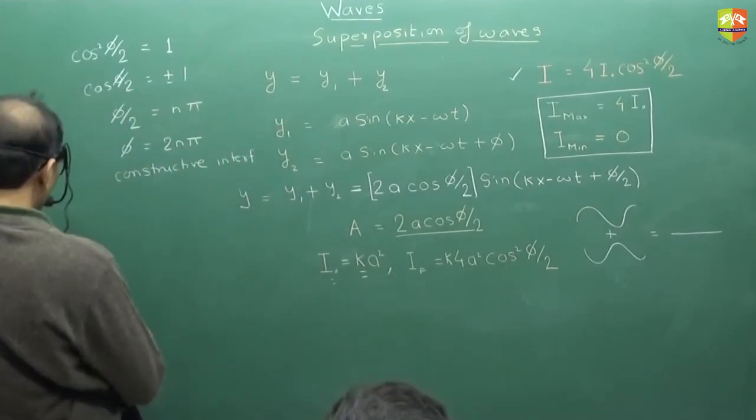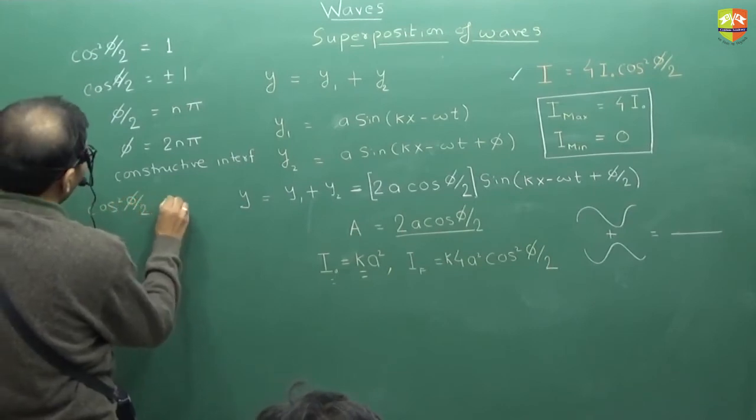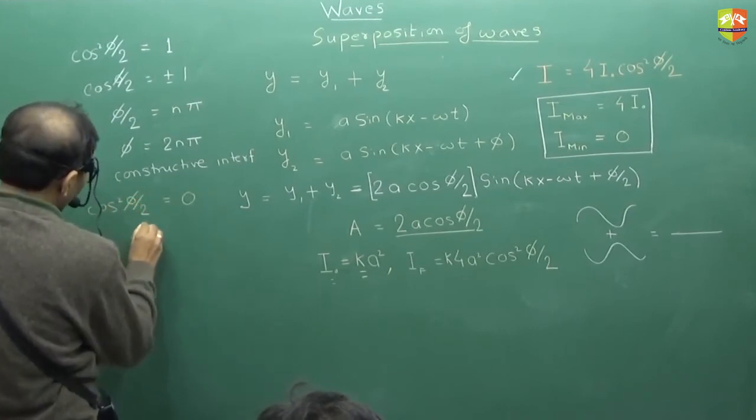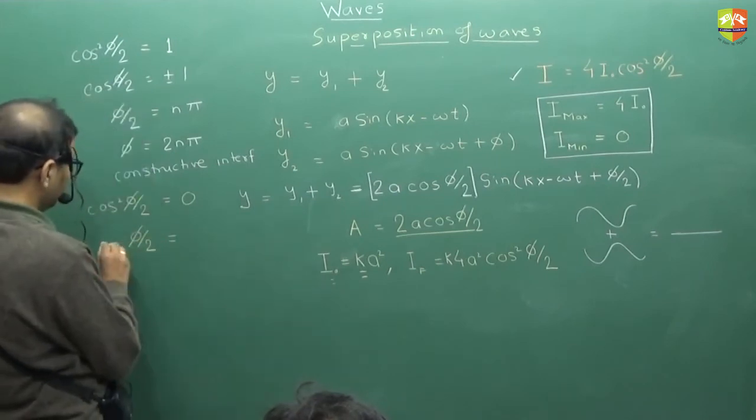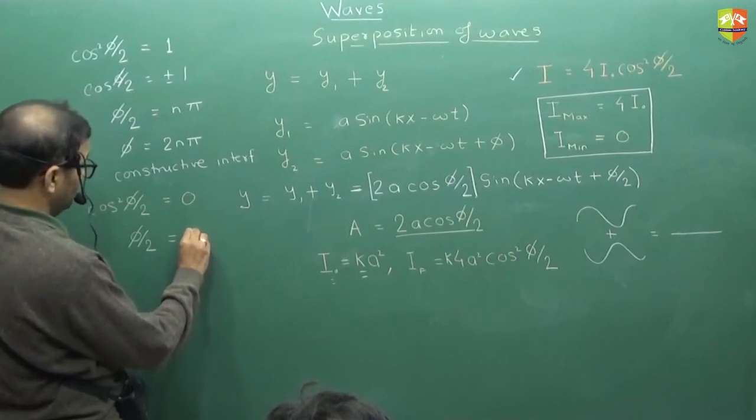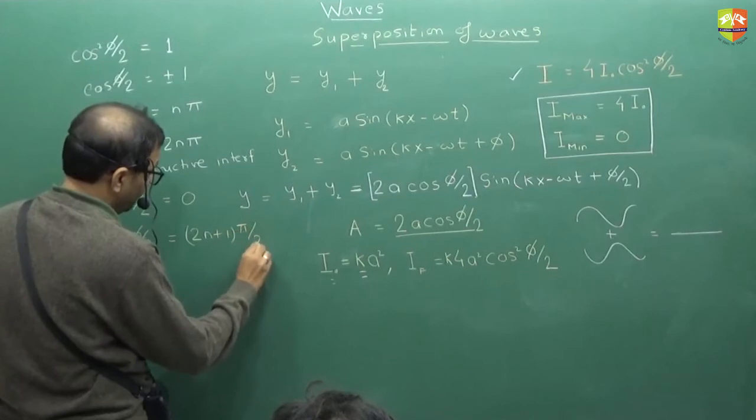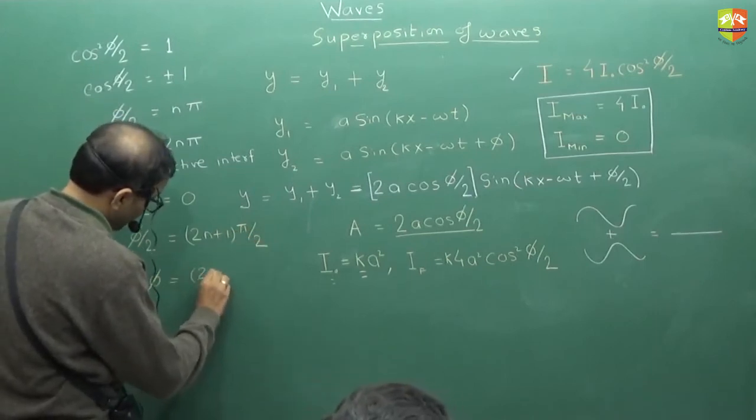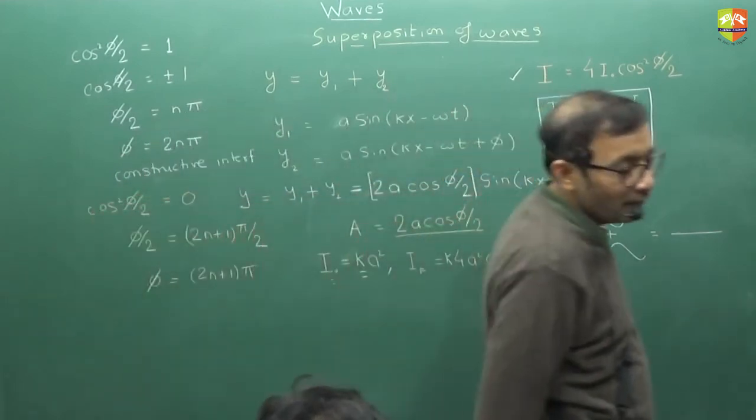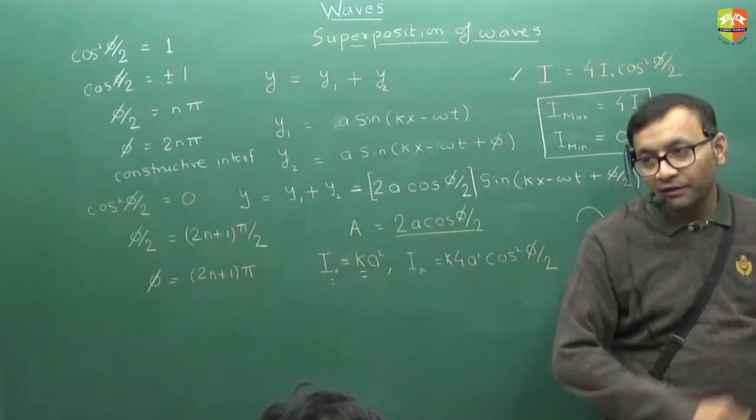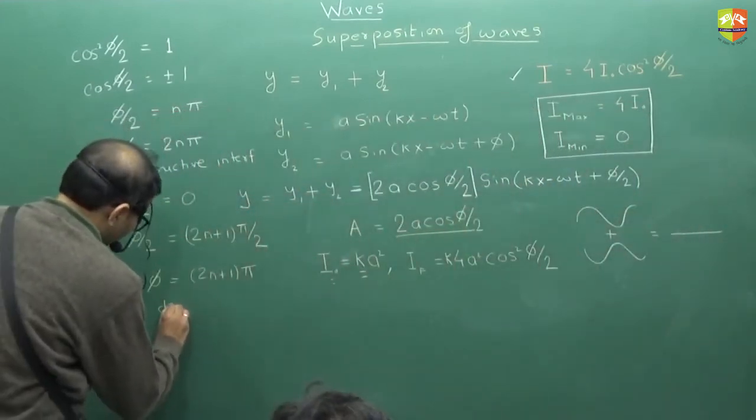So tell me what is the value of φ for minimum intensity? Cos²(φ/2) should be equal to 0. So φ/2 should be equal to (2n+1)π/2. So the value of φ should be (2n+1)π. So if it is an odd multiple of π, destructive interference happens. And even multiple of π, constructive interference happens.